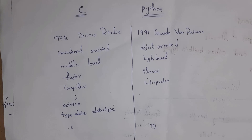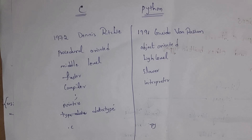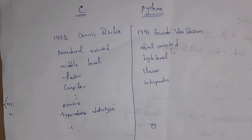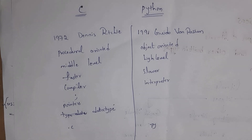Next, I will explain differences between C and Python. C was developed by Dennis Ritchie in 1972, whereas Python was developed by Guido van Rossum in 1991. Python is an object-oriented programming language whereas C is not. C is a middle-level language whereas Python is a high-level language. C is faster because it uses a compiler, whereas Python is slower because it uses an interpreter.